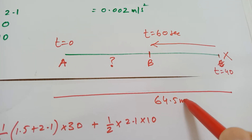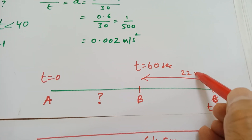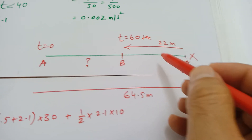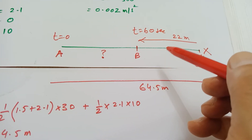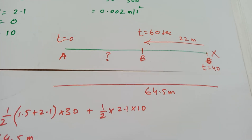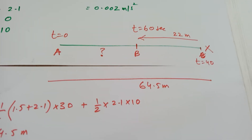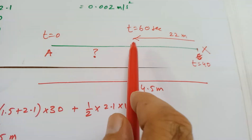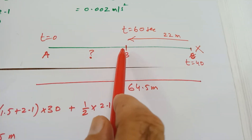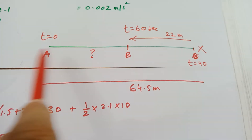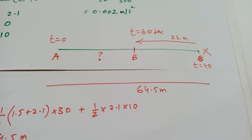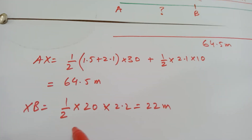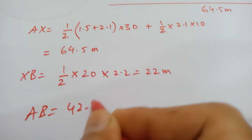AX was 64.5 metres and XB is 22 metres. The examiner is indirectly asking for displacement — the shortest distance between the starting point and the final point. The distance AB is therefore 64.5 − 22 = 42.5 metres.